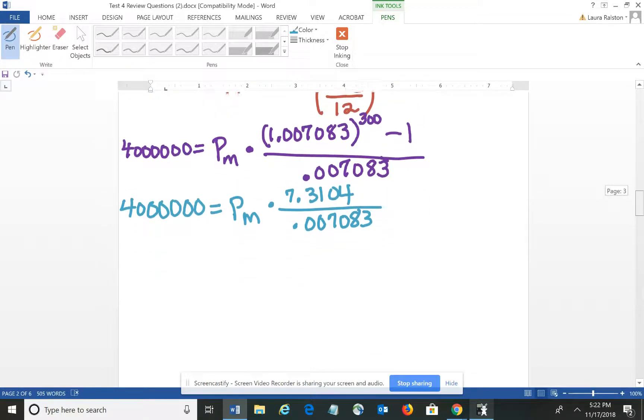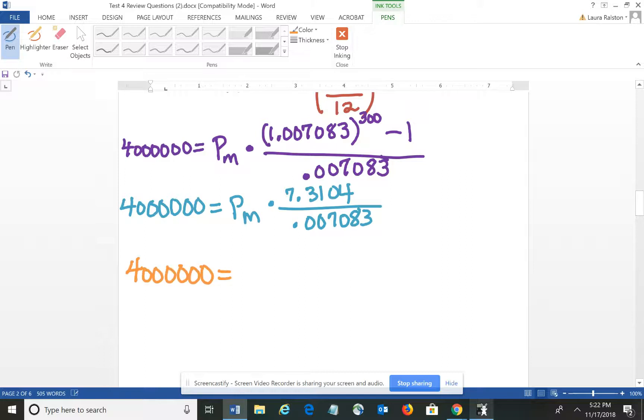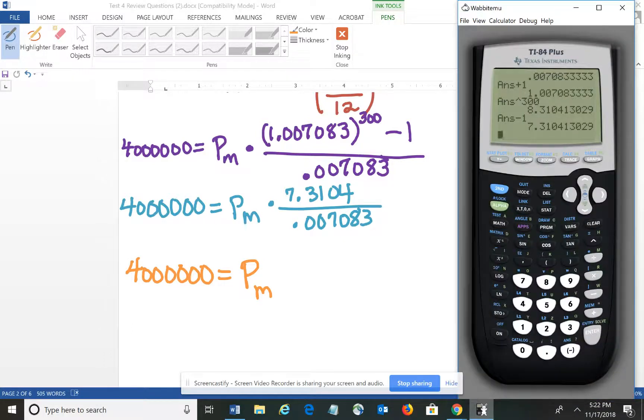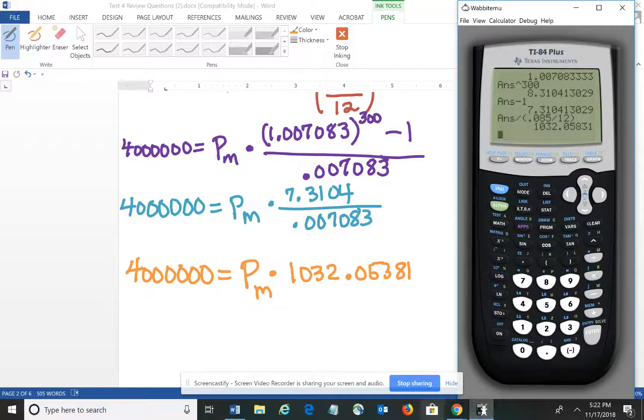So at that point I have 4,000,000 equals the monthly payment amount times 7.3104 divided by .007083. So now we're going to do the division on our calculator. So I have 4,000,000 equals our monthly amount. So 7.3104 divided by – and I'm actually going to put .085 divided by 12 rather than using that approximation. So we get 1,032. So this is times 1,032.05381.